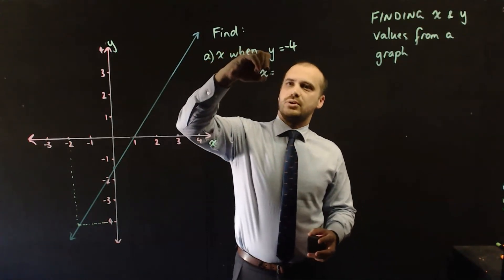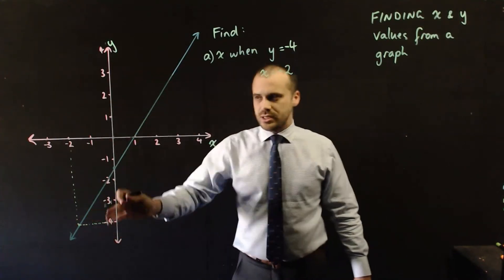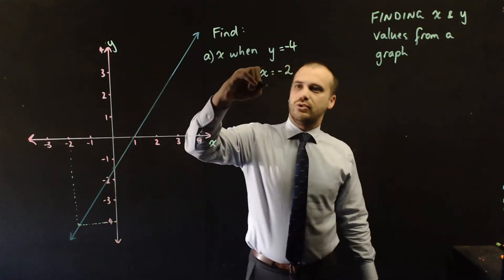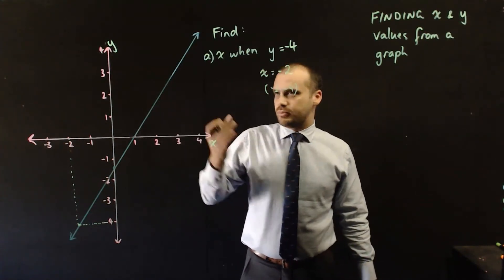x equals negative 2. That means that there is a point here on our linear graph that is negative 2, negative 4. Negative 2, negative 4. What else can we do?